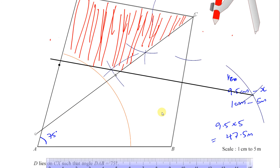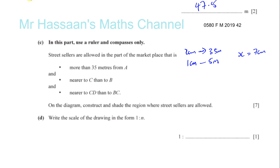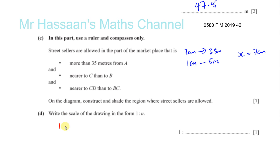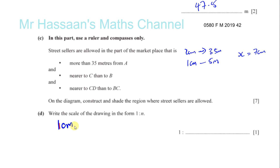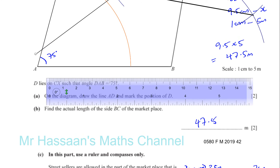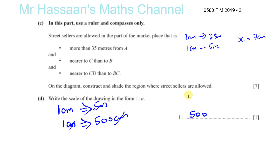Part D says write the scale of the drawing in the form 1 to N. We know 1cm is equivalent to 5m on this diagram. To write it without units, we convert to the same unit: 5m = 500cm. So the scale is 1 to 500. That's the answer to part D, and that covers the whole question.